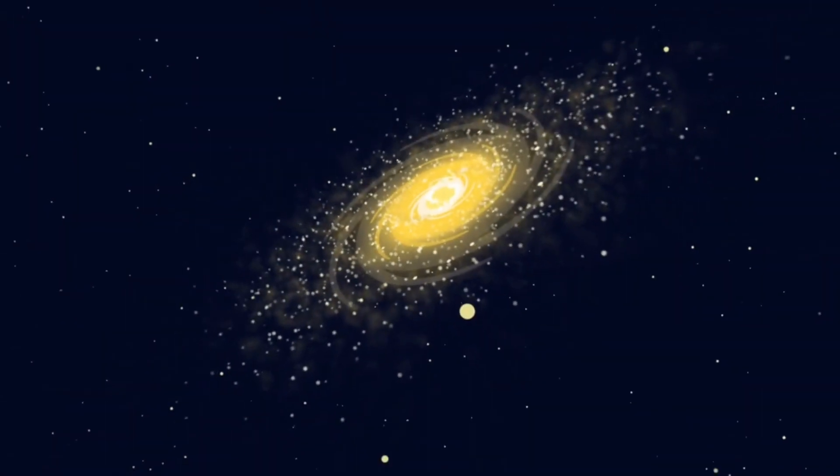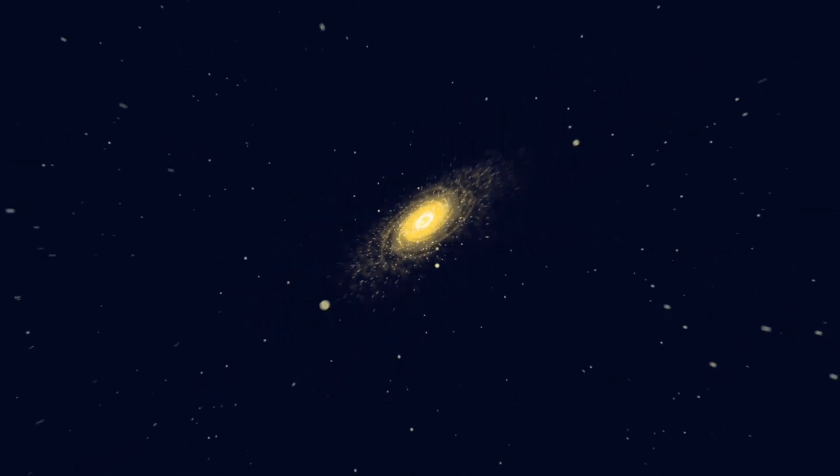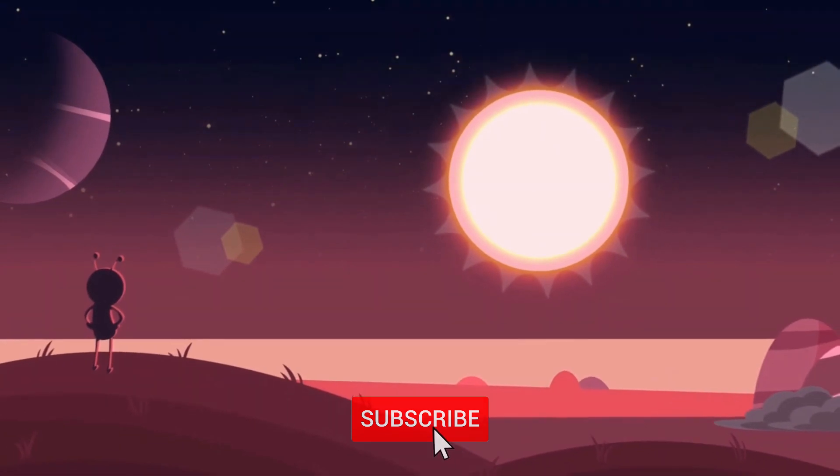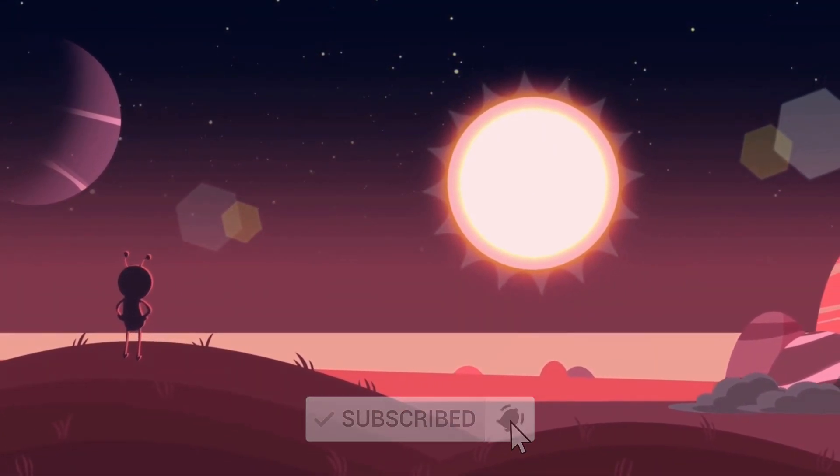There are trillions of stars just like the Sun in the universe. Many of them have planetary systems just like ours. And maybe, on one of them, there is life.